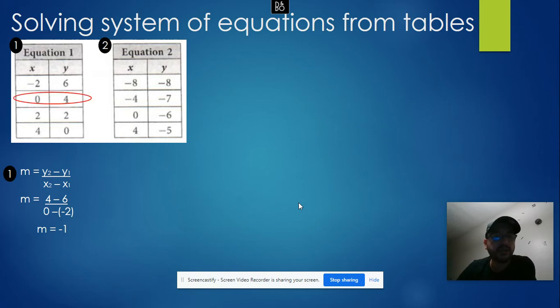My y-intercept is when x equals 0, which in this case is 4. I can write my equation of the line: y equals negative x plus 4.